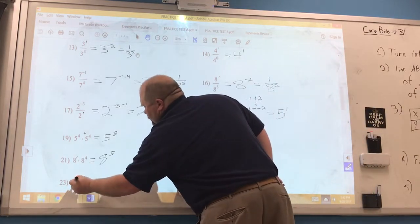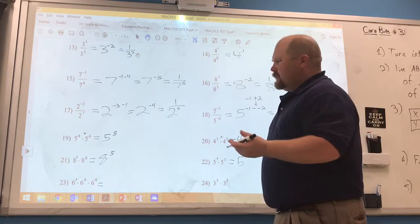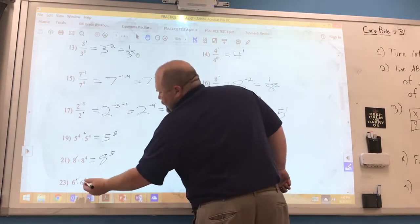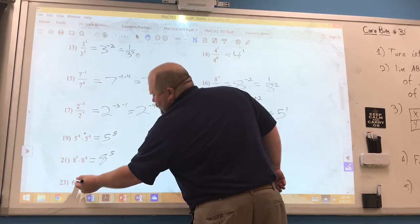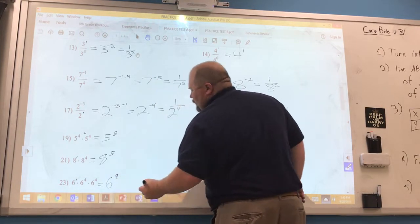Number 23, some students think that because there's 3 bases that it's different. It's not. You just add the exponents because we're multiplying like bases, so 1 plus 4 plus 4 more is 9. So 6 to the 9th power.